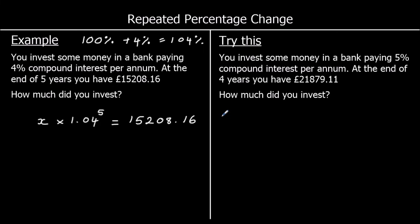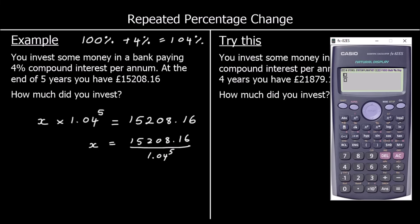So if we want to find x, at the moment it's multiplied by 1.04 to the power of 5. We can divide both sides by 1.04 to the power of 5. Let's type that into the calculator — and we've got 12,499.99895.